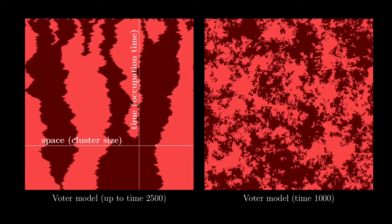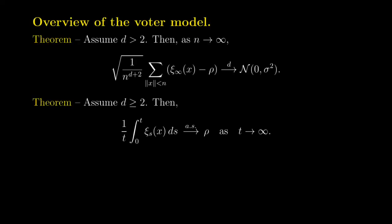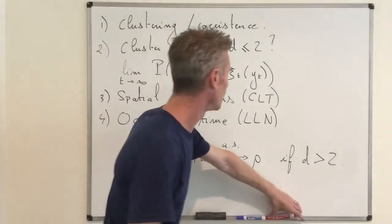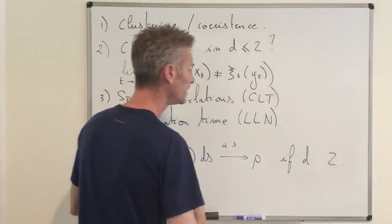This aspect of occupation time was studied in a paper by Cox and Griffith. The result — surprisingly — says that in dimension larger than or equal to 2, the quantity (1/t) integral of xi_s(x) ds converges almost surely to rho. So this is correct not only in dimension 3 and higher, but also in dimension 2.